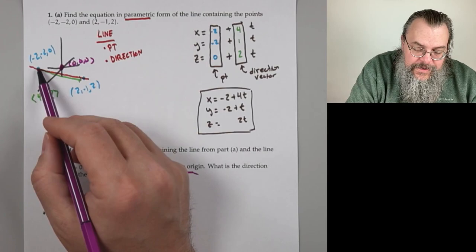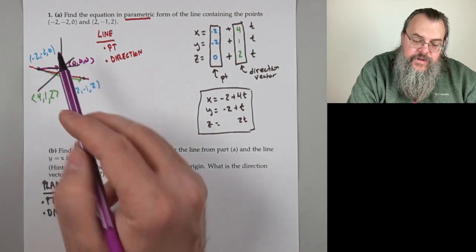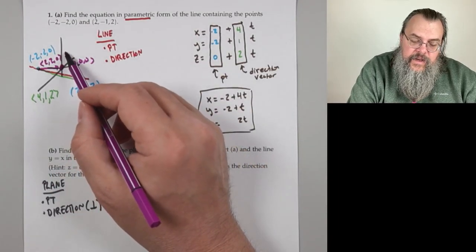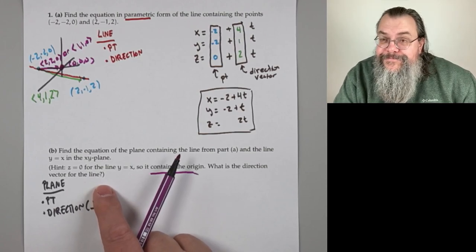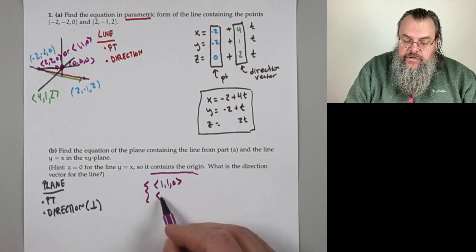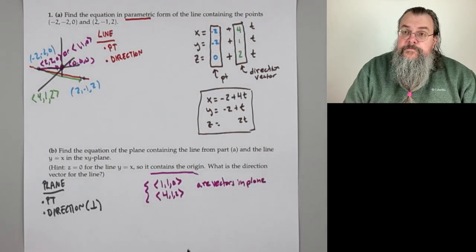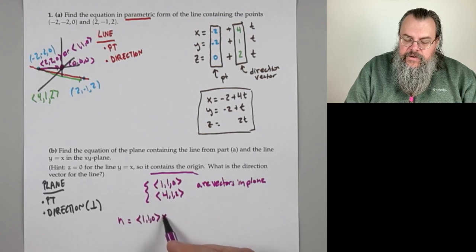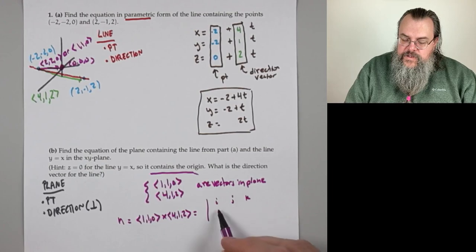Going from (−2, −2, 0) to (0, 0, 0) gives direction vector (2, 2, 0), which we can scale to (1, 1, 0) — that's the direction vector for y = x. We know (1, 1, 0) and (4, 1, 2) are vectors in the plane and they're not parallel. So our normal vector is their cross product.